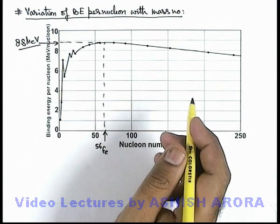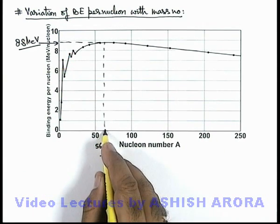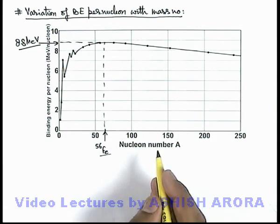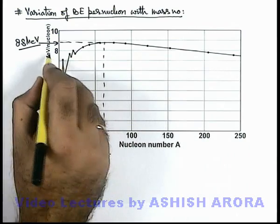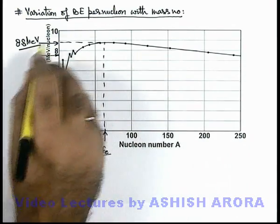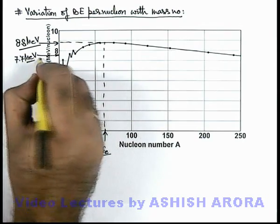So we can say the nucleus of element iron is the most stable nucleus in the whole periodic table. And for all the elements, if we take out the average, the average binding energy per nucleon for all the elements comes approximately 7.7 million electron volts.